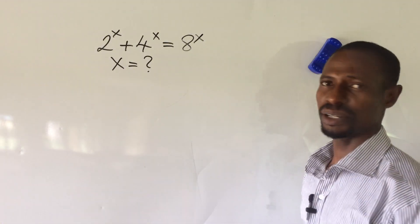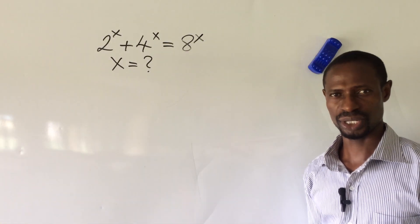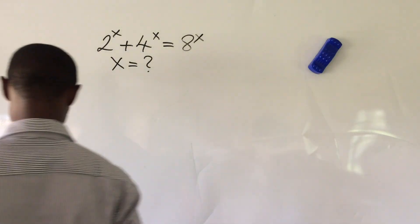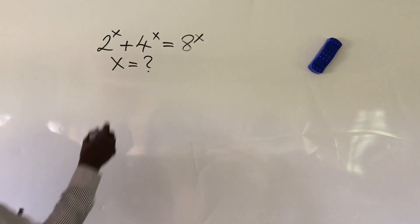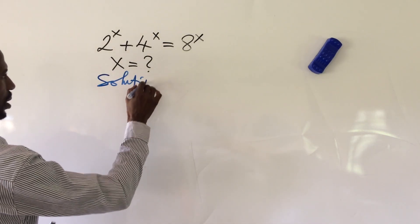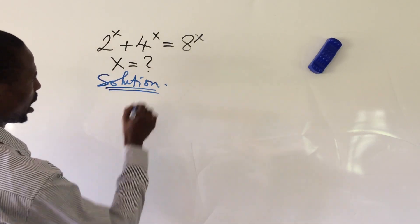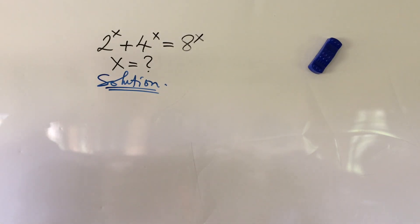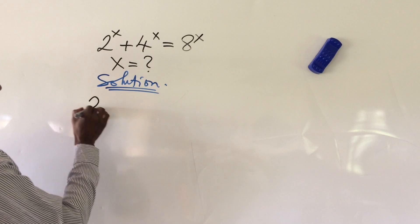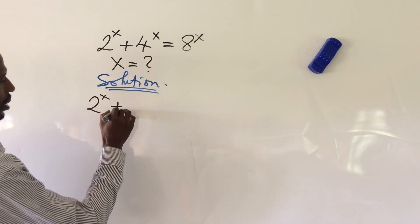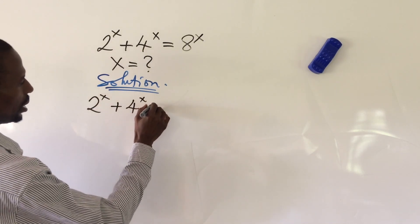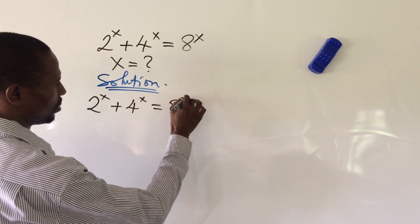We can solve this challenge using two different methods, but I want to use one of them. So the question reads: 2 to the power of x plus 4 to the power of x equals 8 to the power of x.